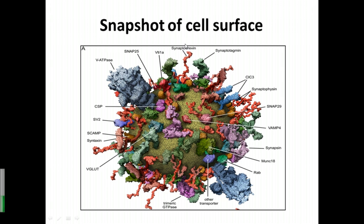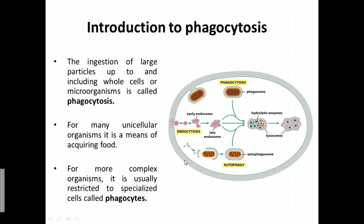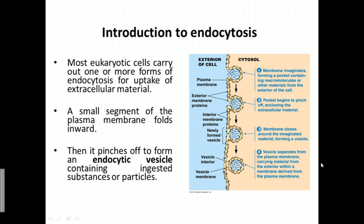If you see a snapshot of the cell surface, you can see plenty of vesicles, each containing plenty of proteins. Phagocytosis is the ingestion of large particles, which includes whole cells or microorganisms. Many unicellular organisms use phagocytosis as a means to acquire food. For more complex organisms, it is usually restricted to specialized cells called phagocytes. For example, in humans, white blood cells are specialized and will phagocytose foreign material inside the body.